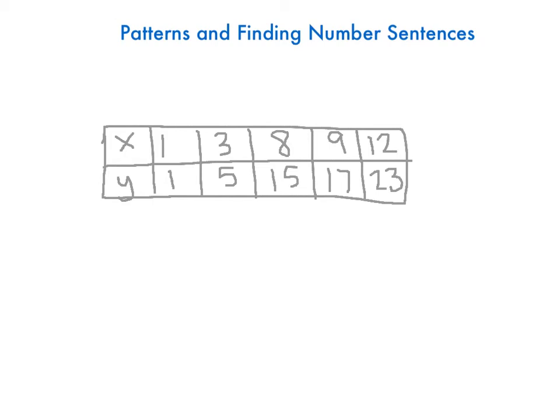So we went from 1 to 1, 3 to 5, 8 to 15. Well, on the first one, 1 to 1, I'd do plus 0 — x plus 0. But on the second one, 3 plus 0 is not 5, so that doesn't work. But 1 times 1 is 1, and 3 times 1 is not 5. Maybe the first one's really hard to work with. 3 could be 3 plus 2 is 5, but 8 plus 2 is not 15. But 5 is close to 6, and 3 has a relationship to 6 — you could double it. So 3 times 2 would be 6, and then subtract 1 to get 5. Because there could be more than one thing in a pattern — it could be a multi-step pattern.